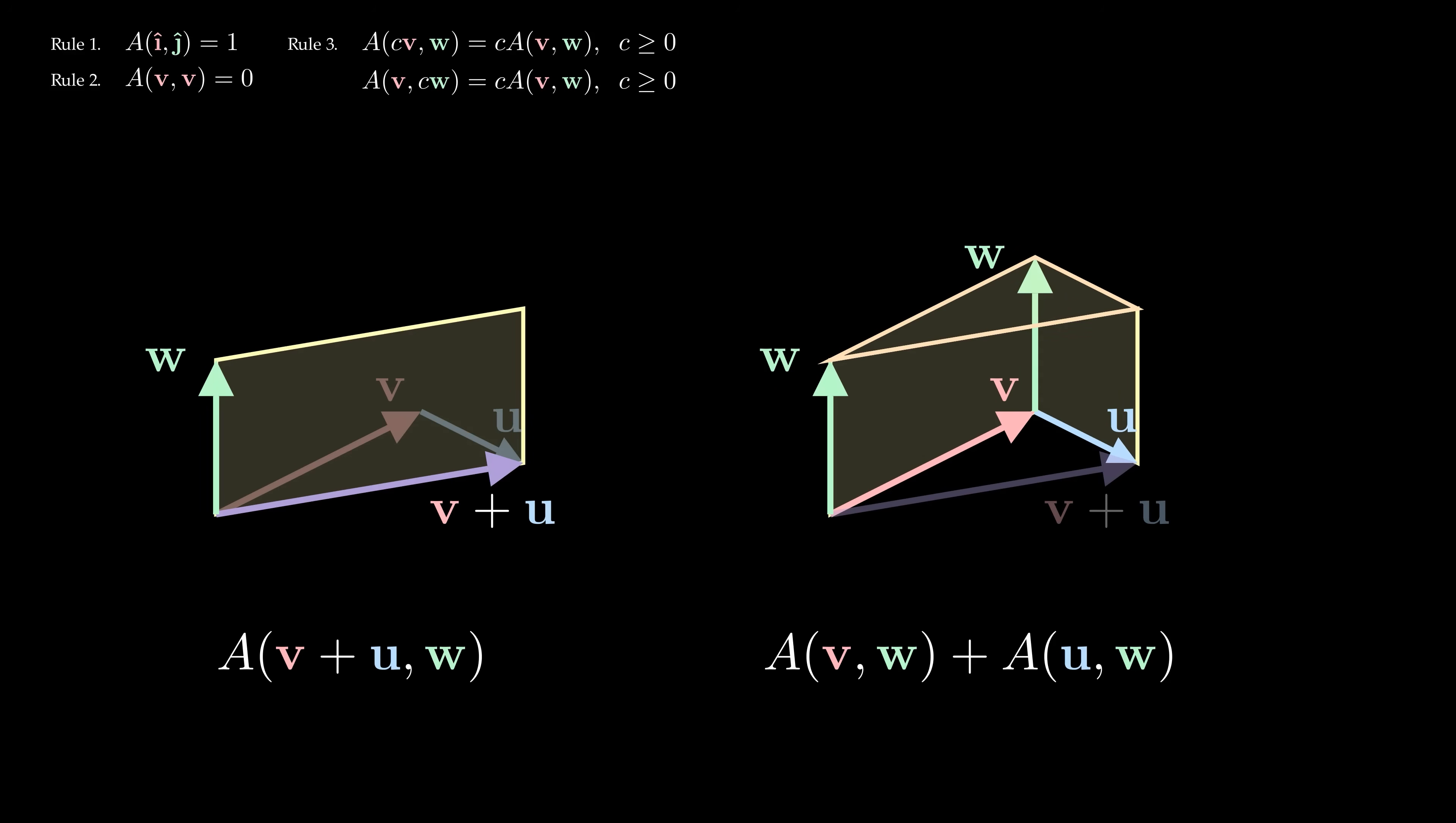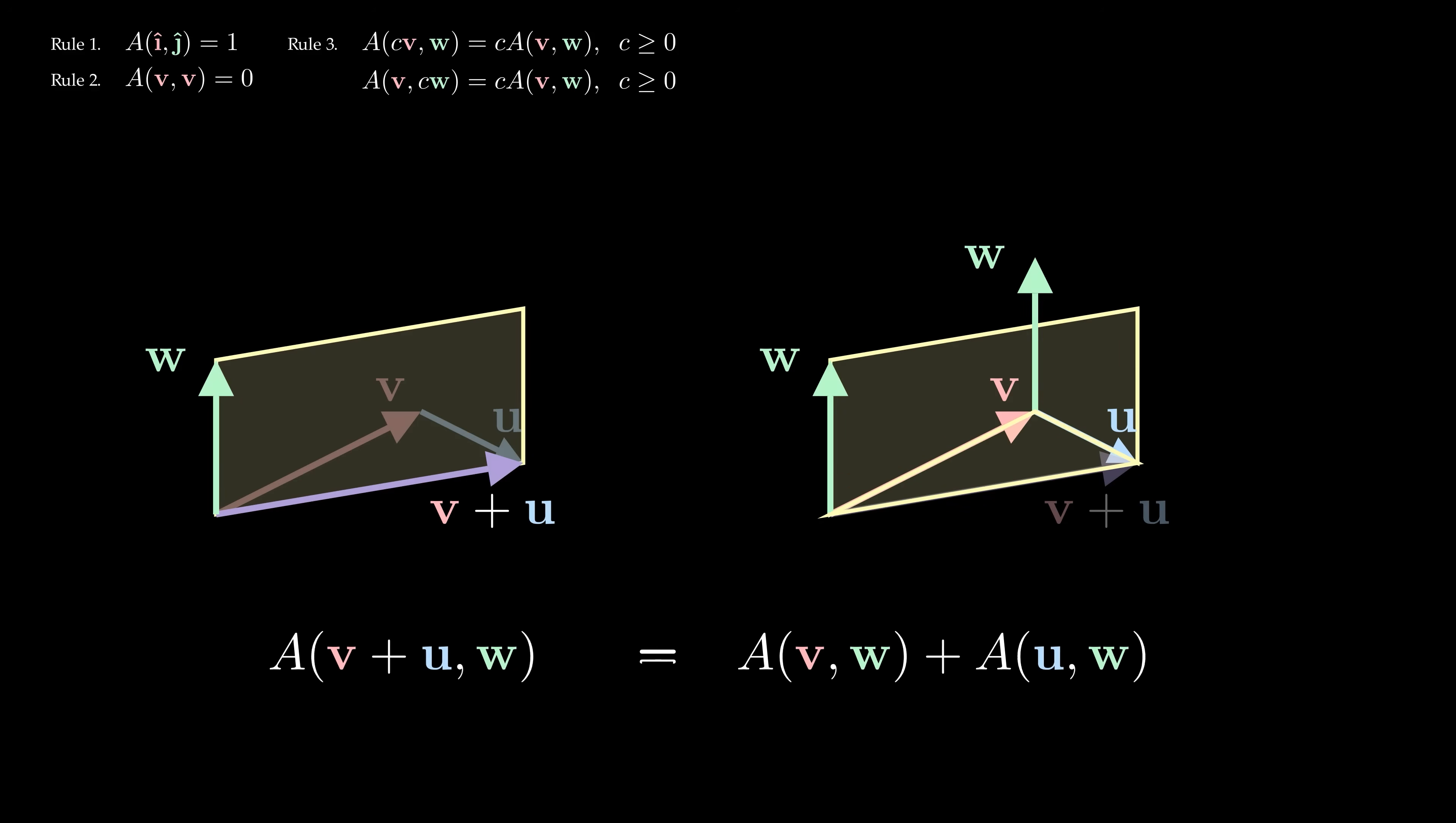I think you can see the answer if you just stared at both diagrams for a while. Just cut this triangle up here, then shift it down. Adding vectors, then forming their areas, gives the same result as adding the original areas together. I think that's pretty cool.